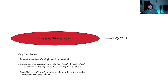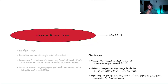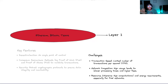Some popular Layer 1 blockchains you would know are Ethereum, Bitcoin, Solana, and Tezos. These lay the foundation and then a ton of other projects build on top of these Layer 1s to enhance and improve processes. However, Layer 1s face a couple of challenges — transaction speed is not very fast, with a limited number of transactions processed per second due to block size and block time.